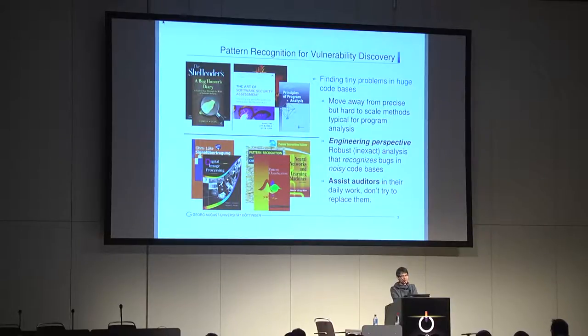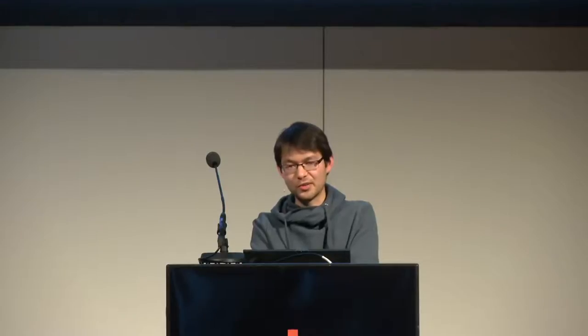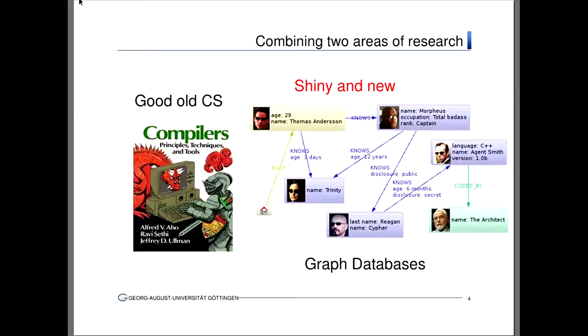I want tools which are realistic — not those static analysis tools that give you thousands of hits that you can't tune. Instead, I want something to assist auditors in their daily work. What you're going to see today is two very different topics — good old computer science compiler construction, and the shiny new graph databases, or as some people like to say, big data — and I want to show that they actually fit nicely together.